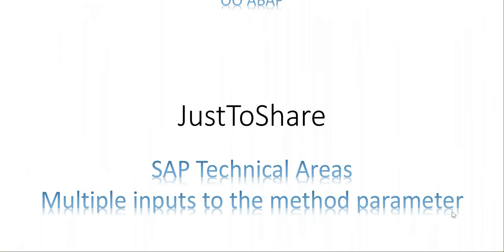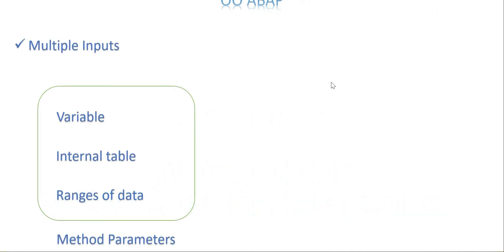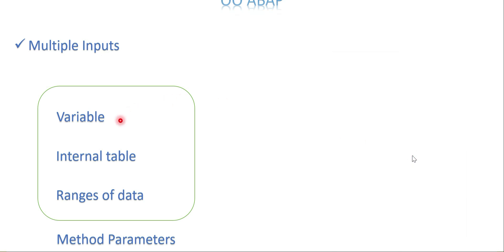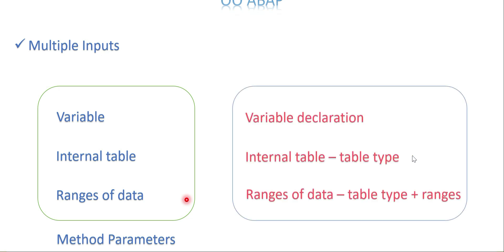Looking at the slides first: the options for method parameters are — it could be a variable, which needs only one value; it could be an internal table for multiple values; it could be a ranges of data like select options; or you can have ranges as well. Ranges and select options have additional parameters: sign, low, high, and option.